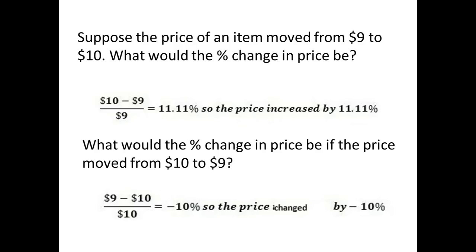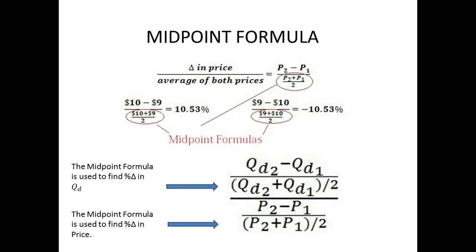Obviously, if we plug these numbers into the Price Elasticity of Demand formula, we get a different PED for the same unit increase or decrease in price. To solve this problem, we can use the midpoint formula instead. The midpoint formula uses the average of both prices: we take price 2 minus price 1 and divide it by price 2 plus price 1 divided by 2. By using the midpoint formula, the percentage change is the same whether the price moves up or down.